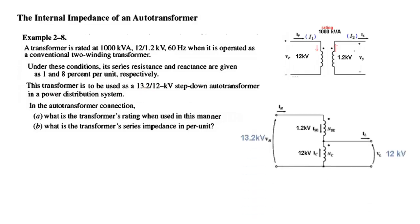We have to connect it like this, where the input voltage will now be 13.2 kV (addition of the two windings) and the output is 12 kV. In the autotransformer connection, what is the transformer rating when used in this manner?